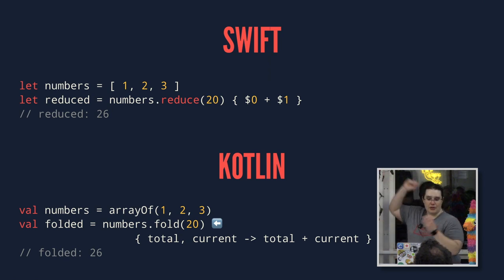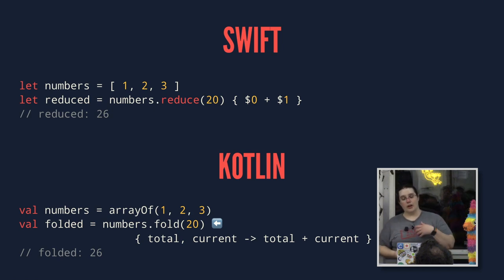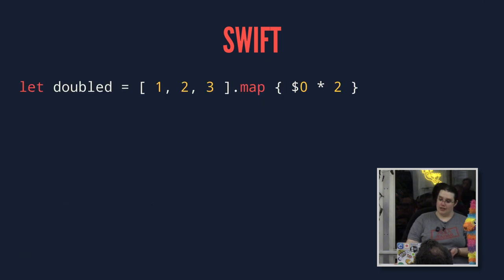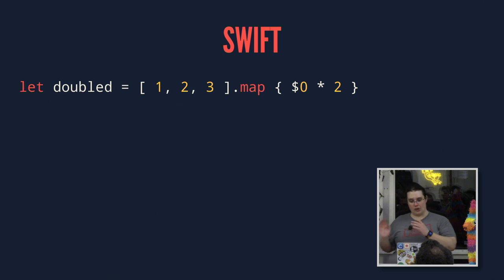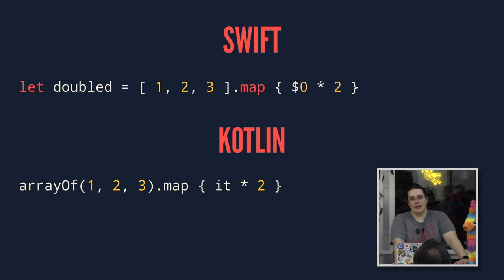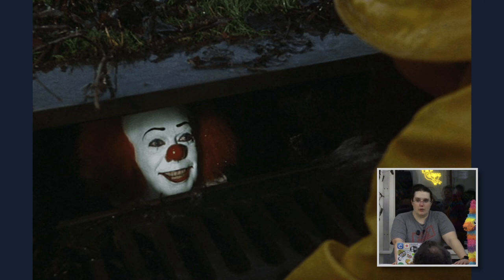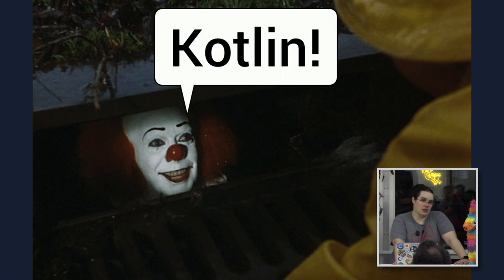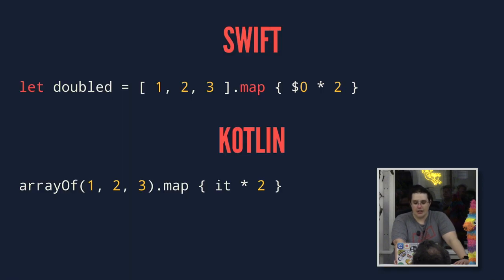As I was going through this example, you might have noticed that there are a couple of things that Kotlin does slightly differently when it comes to parameter placeholders for functions. In Swift, we use the dollar sign and the parameter index to indicate which parameter we're attempting to access. In Kotlin, if you have a single parameter, you use the it keyword. And this always makes me think of the Stephen King movie It, but with the clown trying to get me to use Kotlin.